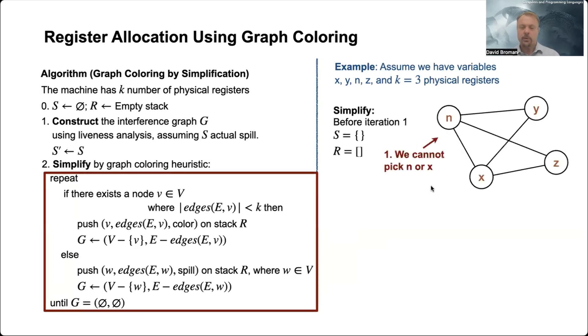Then we should pick a node. So you see here, the first step is if there exists a node v where the number of edges going out from v is less than k. So if we look at, for example, n here - if v was n, it means that it has three outgoing edges.